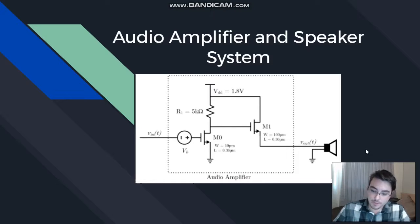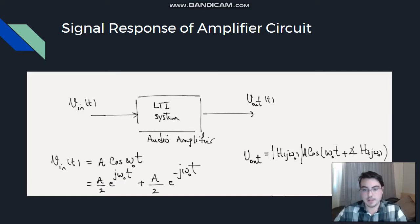The first thing that we're going to be talking about is the signal response of the amplifier circuit due to the input signal. Here our input signal is a given magnitude of a cosine wave, and our output is going to be this equation right here. So, how do we come to this Vout conclusion?